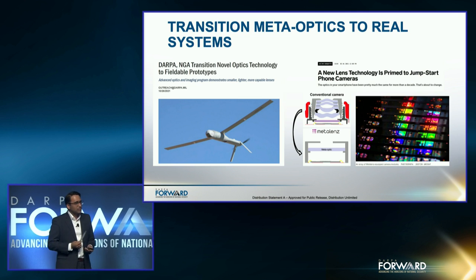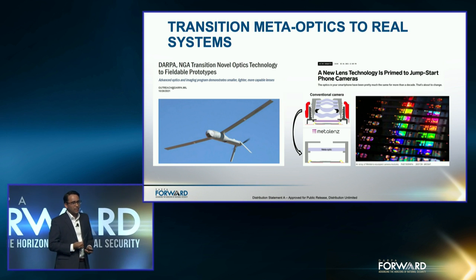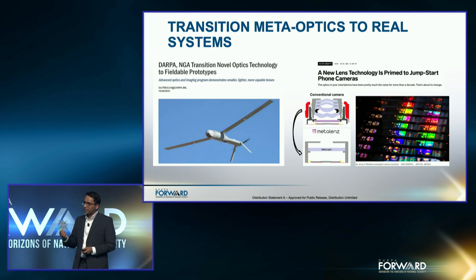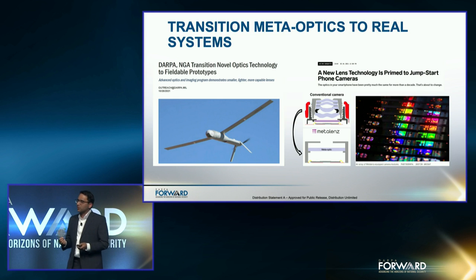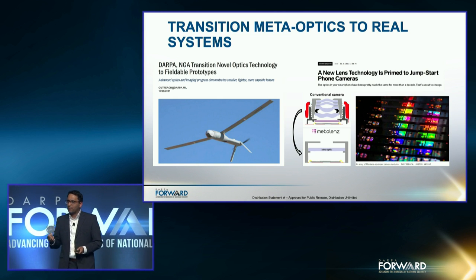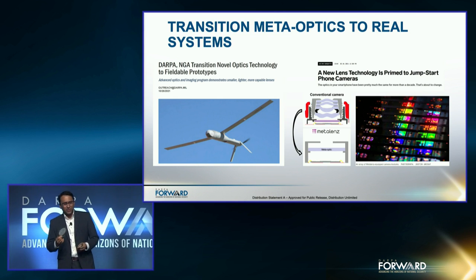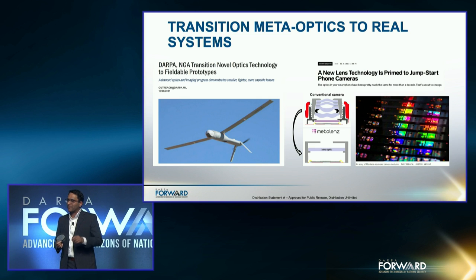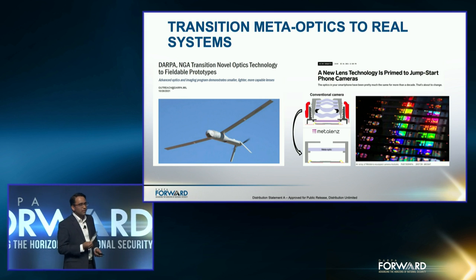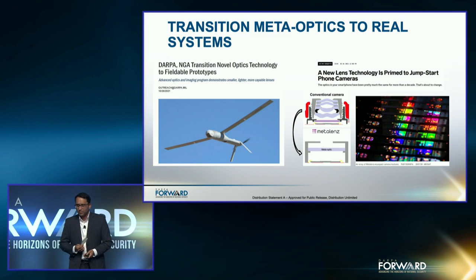We've also transitioned to the commercial sector. Some of our teams have created spin-off companies now generating meta-optics to be integrated into commercial cameras as early as next year. The idea that we can start reducing the thickness of the camera — maybe making it smaller than the smartphone itself — is likely feasible with this meta-surface optic.